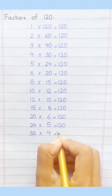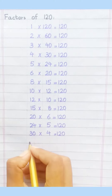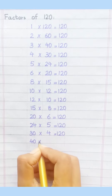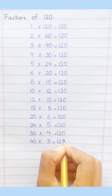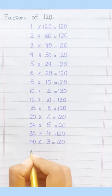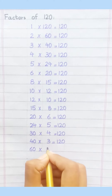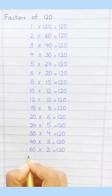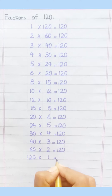Thirty fours are 120. Forty threes are 120. Sixty twos are 120. One hundred twenty ones are 120.